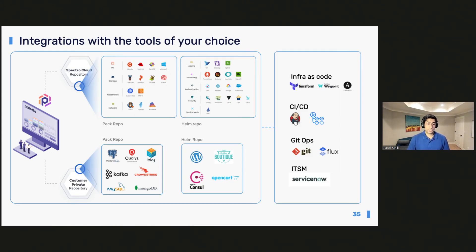With Palette, we also want to make sure we work with your existing toolsets and tool chains. We don't want to force you to use a specific provider, whether it's Git or CI/CD pipeline. We provide out-of-the-box integrations with Ansible and Terraform — in fact, the Terraform provider we offer is the number one downloaded provider in the container orchestration category. We provide integration choices spanning logging, monitoring, security, and service mesh, and make it easy for customers to bring in their own tooling, Helm charts, or customized manifests.